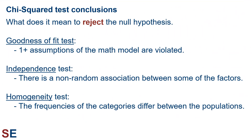So what does it mean to reject the null hypothesis? For a goodness-of-fit test, this means that our mathematical model is not accurate or valid — essentially, one or more assumptions of the mathematical model are violated. Depending on the model we use, this can have a variety of implications for the system we're studying. For a test of independence, this means that there is a non-random association between some of the factors. For a test of homogeneity, this means that the frequencies of the categories differ between the populations — there is a non-random association between the population and the other factor we're measuring.